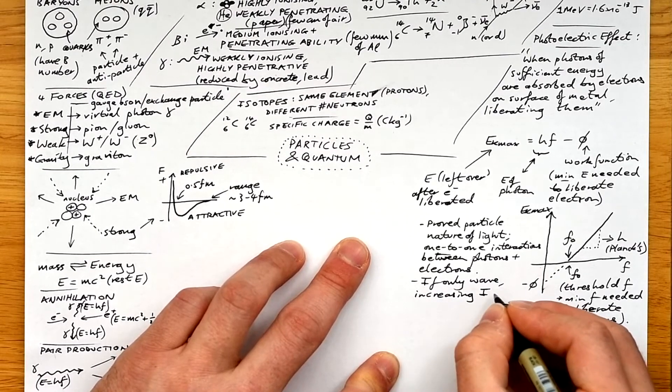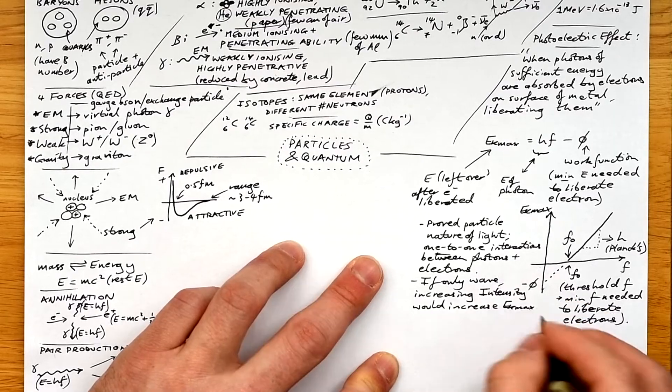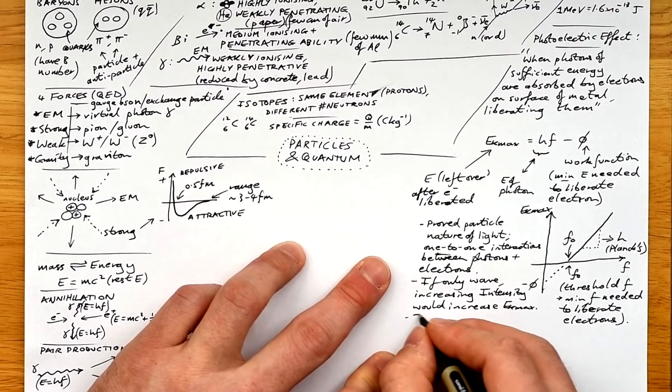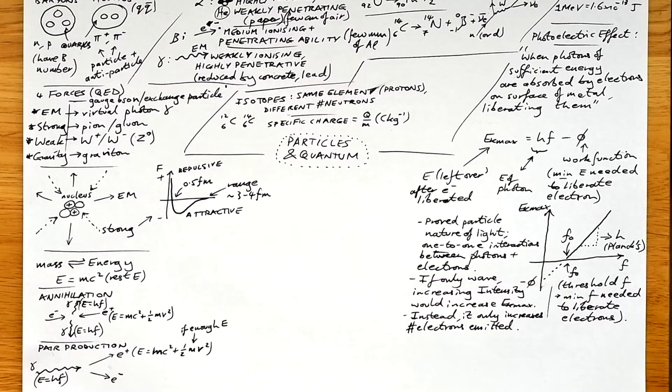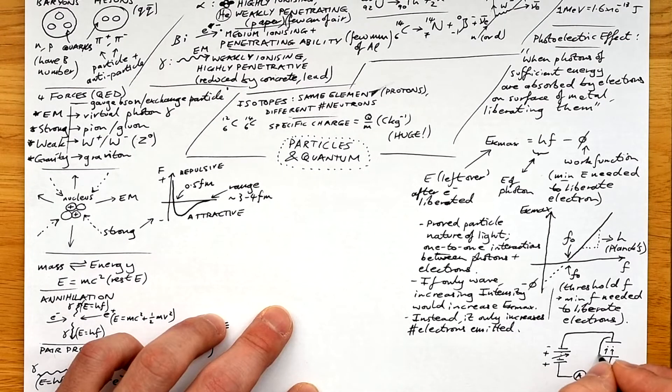And it's one-to-one because if it were only a wave, then increasing the intensity of light would have increased the EK of the electrons liberated. But it doesn't. All it does is increase the number of electrons that are emitted per second, because there are more photons.